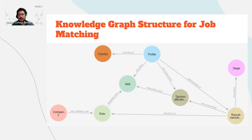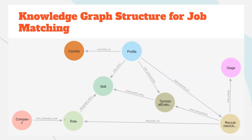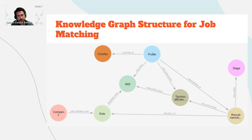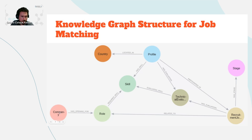Today we are talking about job matching specifically. The schema I am showing has two core nodes: profile and role. A role is a job, and a profile is a representation of a candidate. We have the candidate's country, all the skills they have, technical evaluations if the profile has had interviews, and the recruitment journey. Every time a candidate is selected or participates in a process for a role, we have a recruitment journey with stages — it can start at the beginning, include an interview, a booking, and so on. The role is also connected to a company.